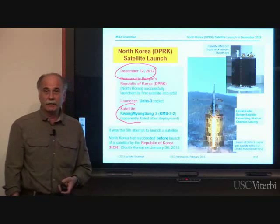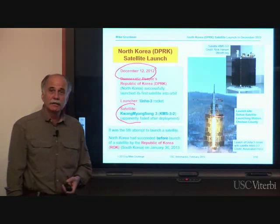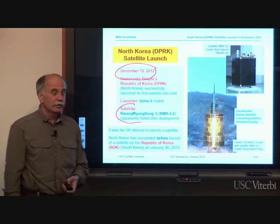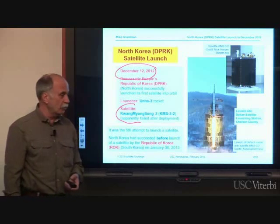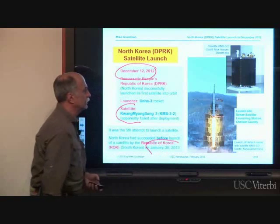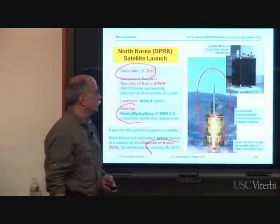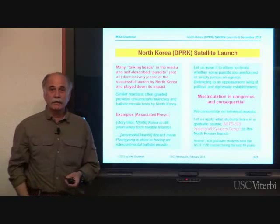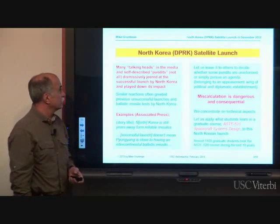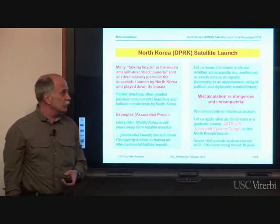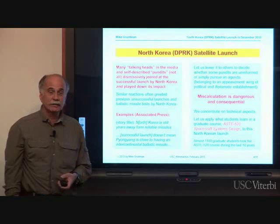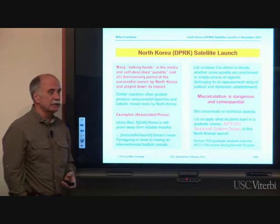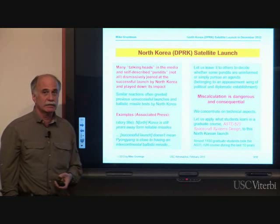The satellite apparently failed after the launch. It was the fifth attempt by North Korea to put a satellite into orbit, and they finally succeeded. They also succeeded before South Korea, which launched its satellite only two weeks later, on January 30, 2013. This photo shows the launch of the rocket, and on the right side at the top there is the satellite.